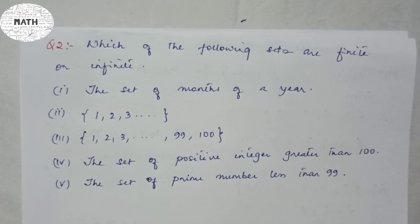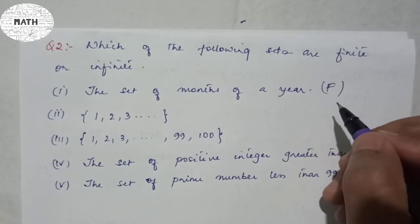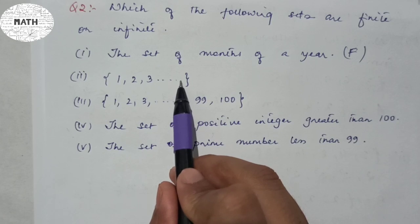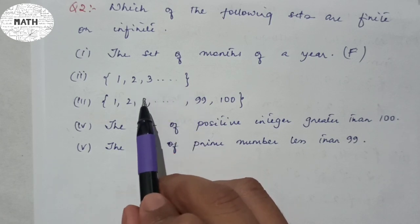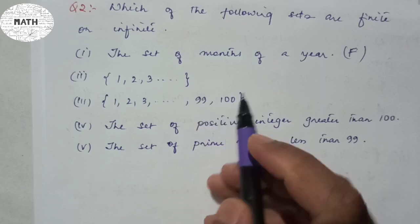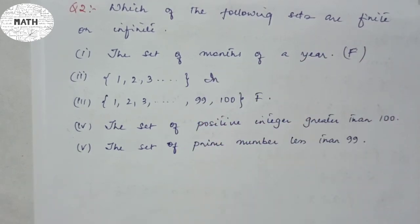Let's do question two of exercise 1.2: which of the following sets are finite or infinite? Number one: the set of months — obviously finite, you can count them. Number two: {1, 2, 3, ...} — there is no ending, so it is infinite. Number three ends at 9900, so that is finite. I want you to do questions four and five by yourself.